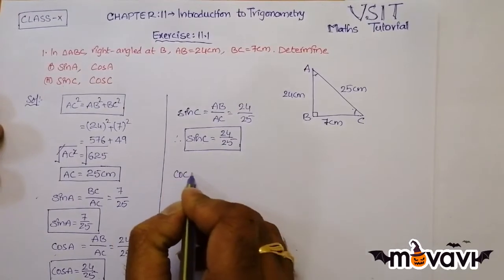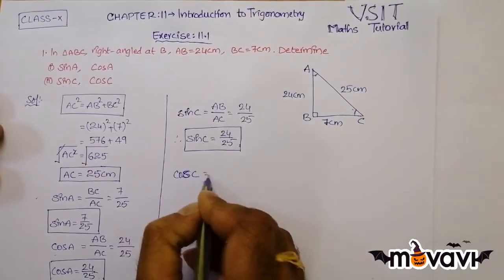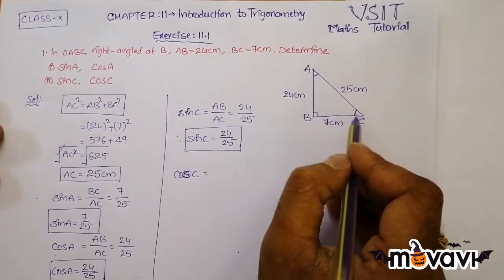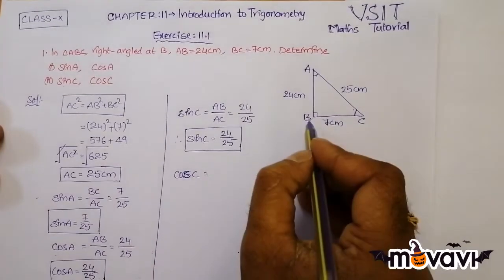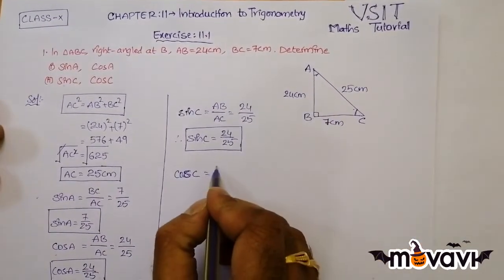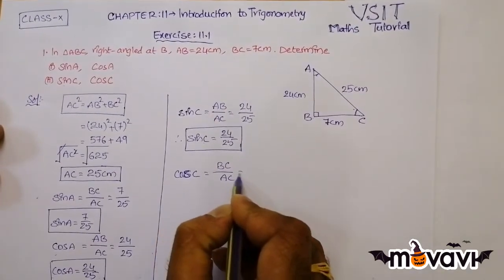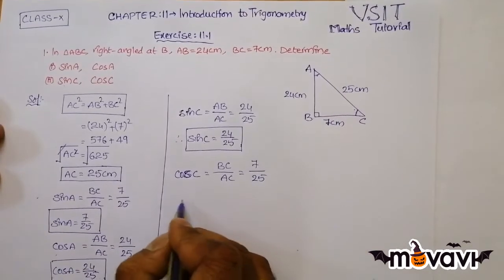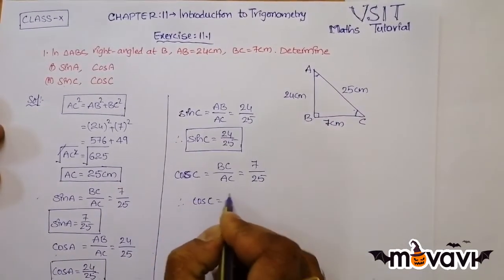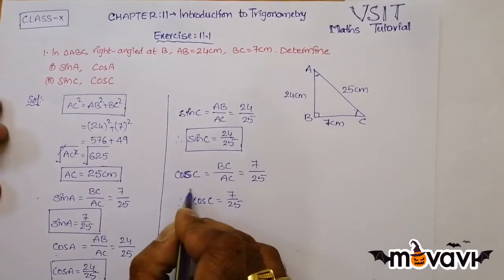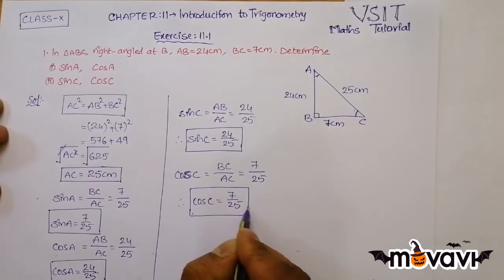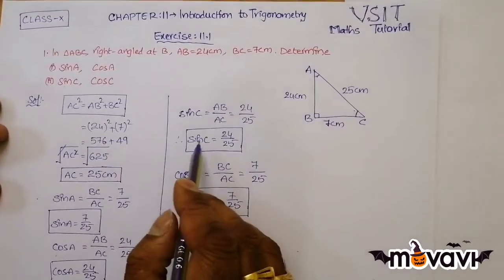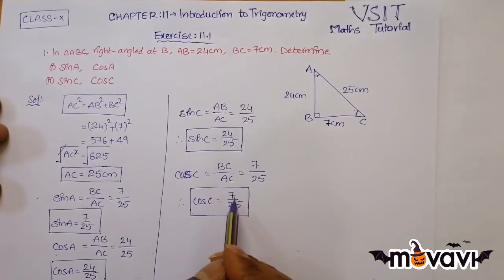Similarly, cos C is equal to adjacent side over hypotenuse. BC is adjacent to angle C and AC is the hypotenuse. The value of adjacent side BC is 7 centimetres over 25 centimetres. Therefore, cos C is equal to 7 by 25. We don't get units because the centimetres cancel out. So sin C is equal to 24 by 25 and cos C is equal to 7 by 25. This is the procedure to solve this question.